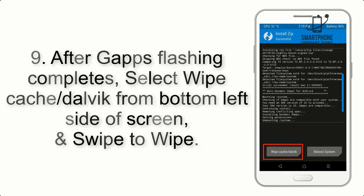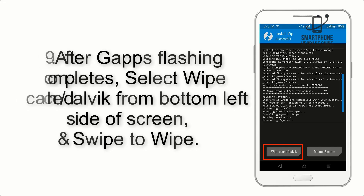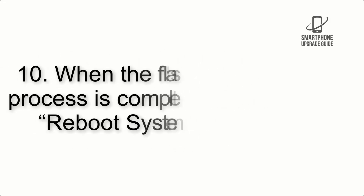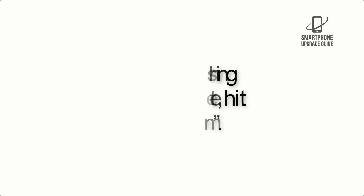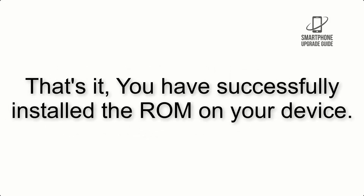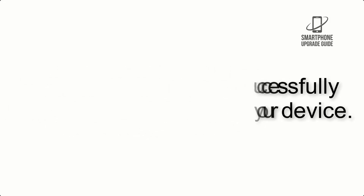Step 9: After GApps flashing completes, select Wipe Cache and Dalvik from the bottom left side of the screen and swipe to wipe. Step 10: When the flashing process is complete, hit Reboot System. That's it — you have successfully installed the ROM on your device.